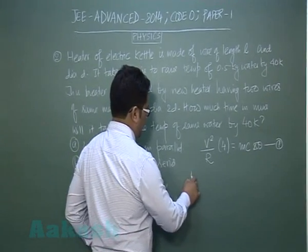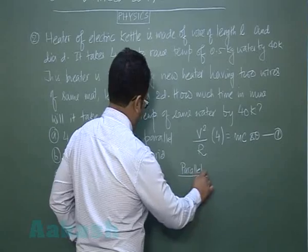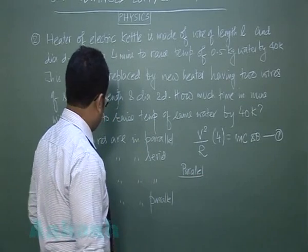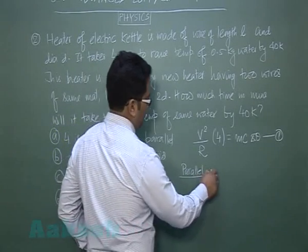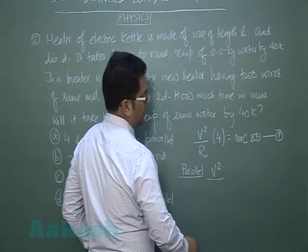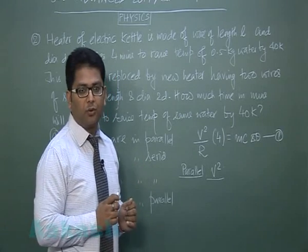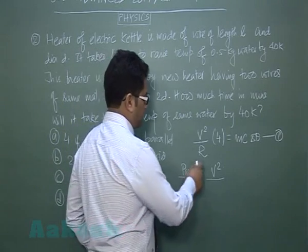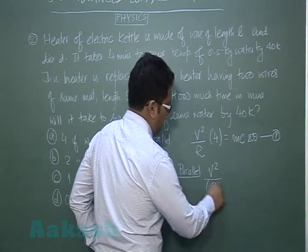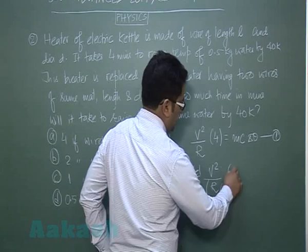For the first case, if they are connected in parallel, then quite obviously it would be V squared by resistance. The resistance of each wire is R by four, so if they are in parallel that would be R by eight.